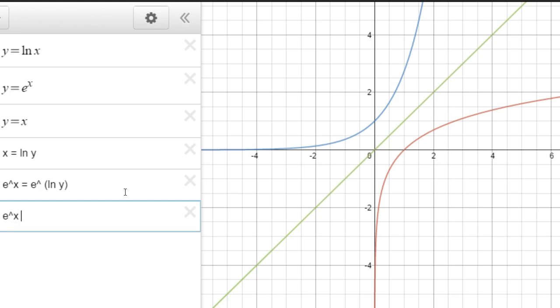e to the x is just e to the x, and then e to the natural log of any number is just that number, so this just turns into y. So that's actually the inverse function, and the cool thing is that they're both functions. They're one to one.